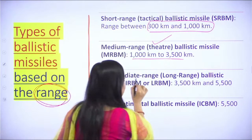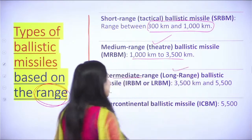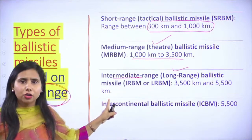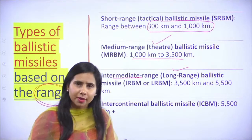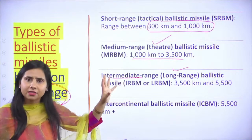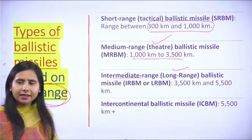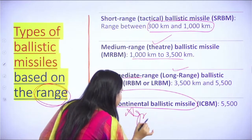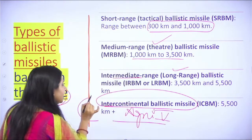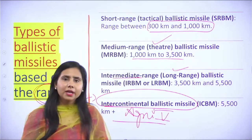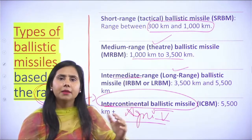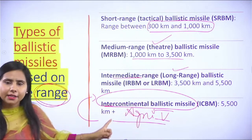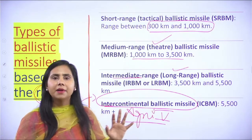Third is intermediate, or long range ballistic missile — used when the enemy range is 3500 to 5500 km. Fourth and last is intercontinental ballistic missile. You recently heard about Agni-5 missile — that is an intercontinental ballistic missile. It means we can hit an enemy from one continent to another. Distance: 5500 km or more, use an intercontinental ballistic missile.